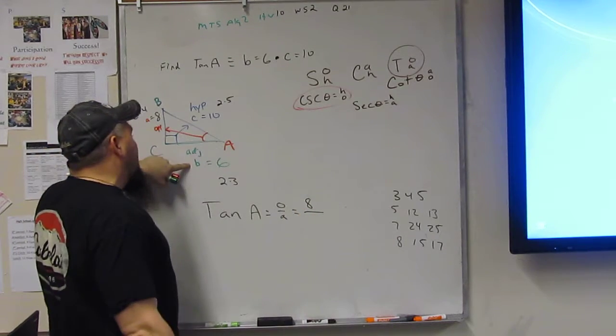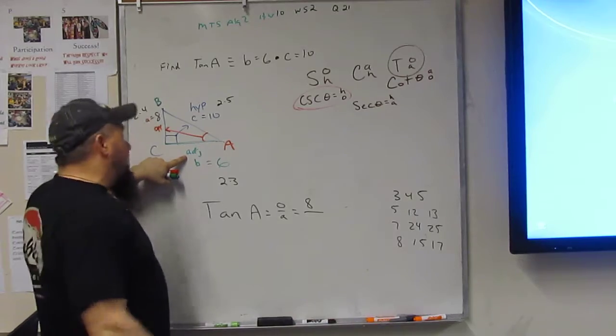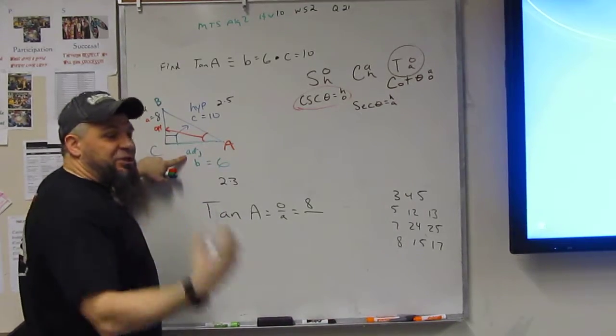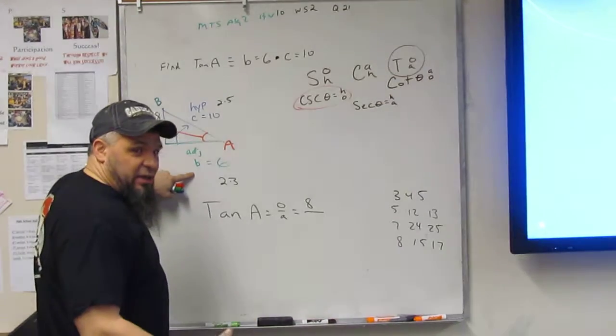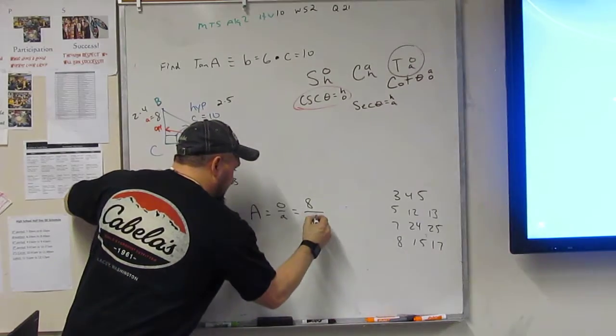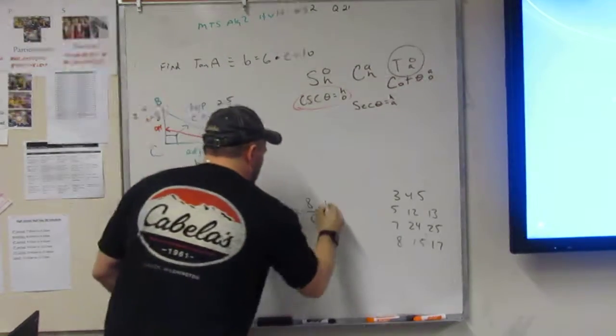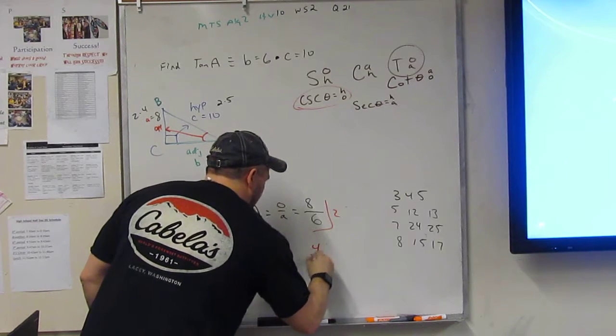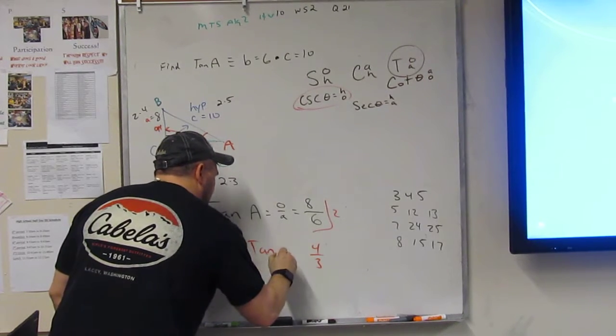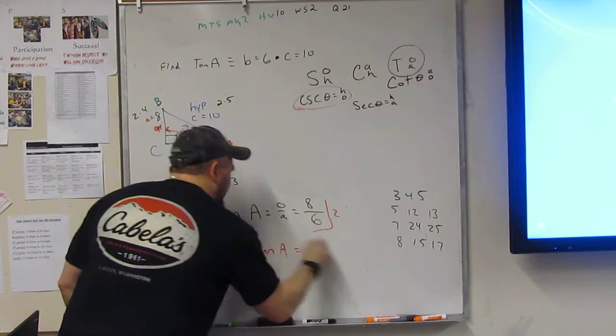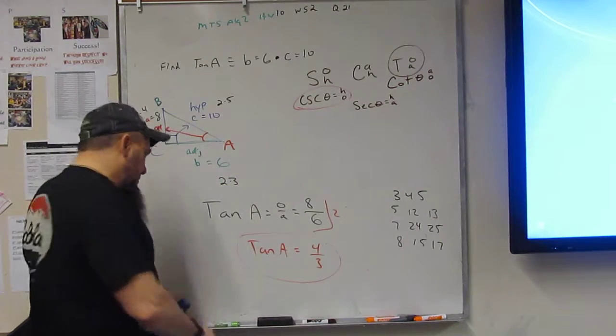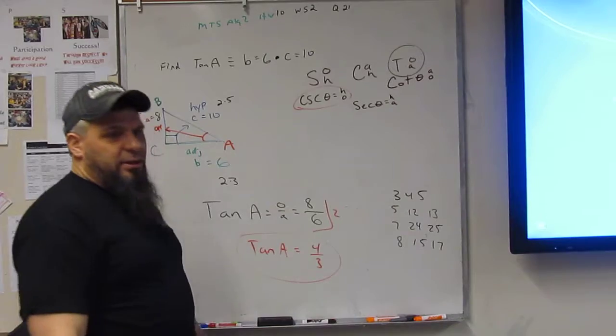And adjacent, not A, little A, but adjacent, which is B, which is 6. Then what I can do is reduce it. So I've got 4 over 3. So, tangent of A is equal to 4 over 3. There we go.